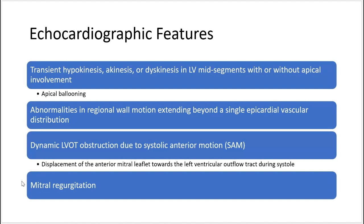If the apex is not moving well, you get something called apical ballooning. Another feature includes abnormalities in regional wall motion extending beyond a single vascular distribution, such as the right coronary artery, the LAD, or the circumflex. The echocardiographic features also include dynamic LVOT obstruction due to systolic anterior motion, also known as SAM. SAM is the displacement of the anterior mitral leaflet towards the left ventricular outflow tract during systole. Sometimes there's also mitral regurgitation due to SAM.